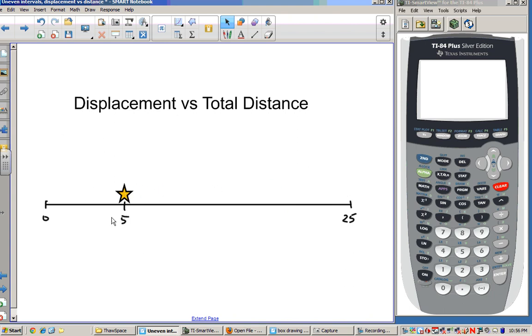If we're talking about displacement, we're really just considering what was its change in position. So displacement is the same thing as the change in position, and this star, in fact, only changed in position by 5 units, 5 units to the right. But if we're considering total distance, we know that the star started here at 0, went all the way 25 units this way, and back 20 units this way. So the total distance that the star traveled was 45 units.